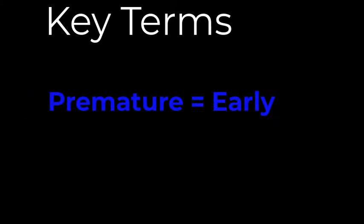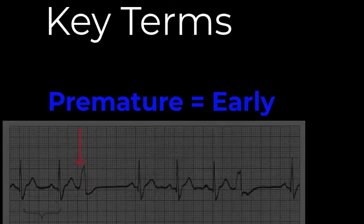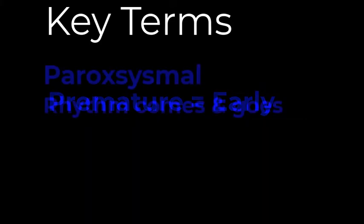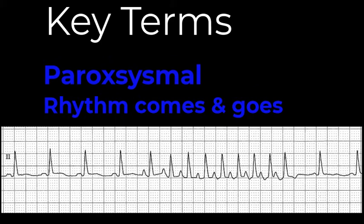We label a complex as premature any time it occurs before the next anticipated beat — premature simply means something came early. The next term is paroxysmal, which simply means that what you are identifying starts and stops abruptly, or it comes and goes. It is not a continuous rhythm that stays indefinitely on the rhythm strip.